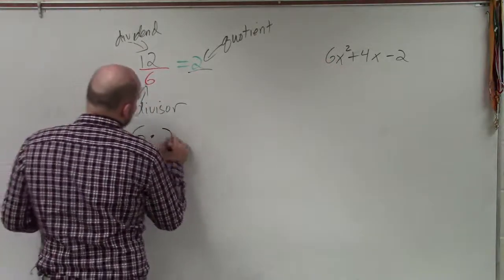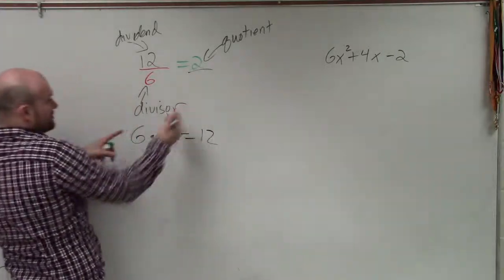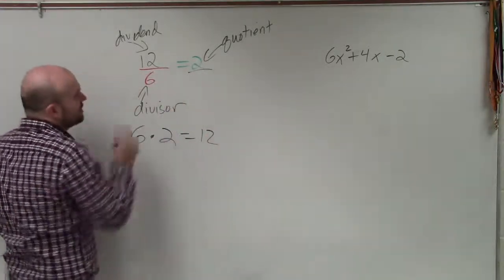It's saying 6 times 2 equals 12. Your divisor times your quotient, which is your answer, takes you back to your dividend.